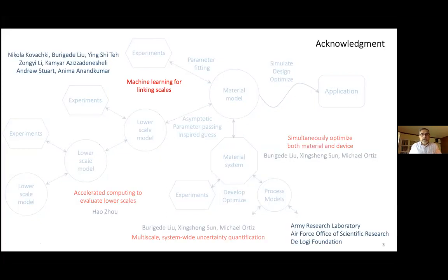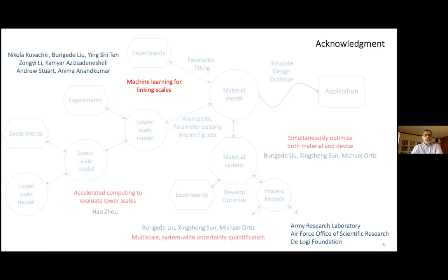Today I'll focus on machine learning. Let me acknowledge the people involved—it's been a group effort. In the last couple of years we have had a lot of fun with Andrew Stuart and Anima Anandkumar and all our students. Much of the work I'll talk about today is by Nick Kovachki, who's a graduate student of Andrew's, Burigede Liu, who's a postdoc with me, and Ningxie Teh, who was a former student of mine. Zongyi Li is a student of Anima, and Kamyar Azizzadenesheli was a former postdoc with Anima currently at Purdue.